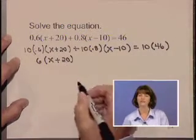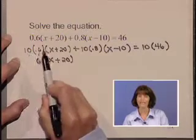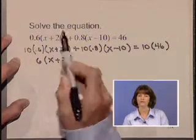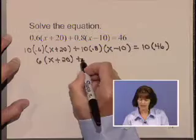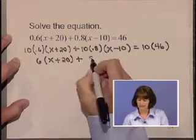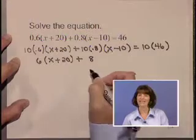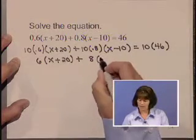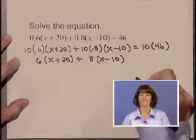Oftentimes students will make the mistake of multiplying 10 times both of those factors. But don't do that. Looking at the second part as well, we take 10 times 0.8 to get 8. Now we take that product times the remaining piece, x minus 10.